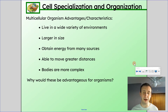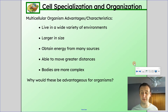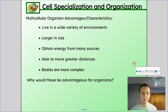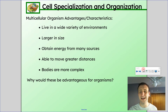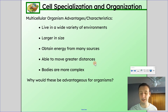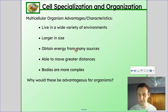Multicellular organisms are larger in size — when we get more and more cells together, we can get larger organisms. They can also obtain energy from many sources: different cells can be specialized to get energy from different things, like plant cells with chloroplasts that get energy from the sun to make sugars, while other cells rely on mitochondria to turn sugars into cellular energy. Many multicellular organisms are able to move great distances and their bodies are more complex. Essentially, they're adapted to a different environment than single-celled organisms, giving them more adaptability.